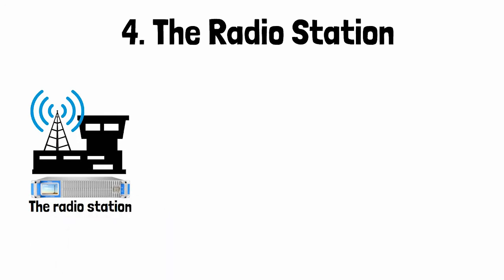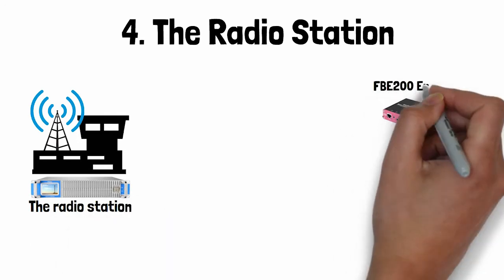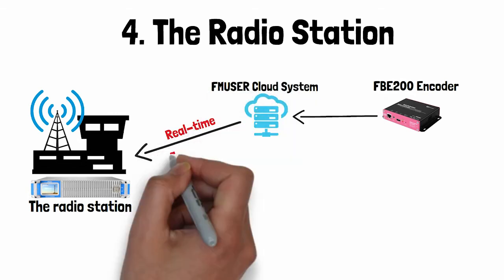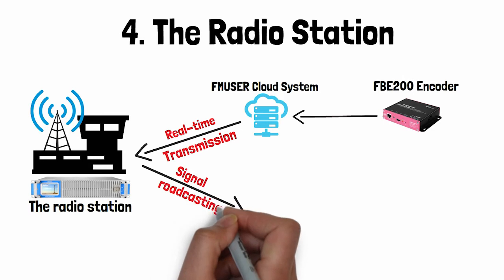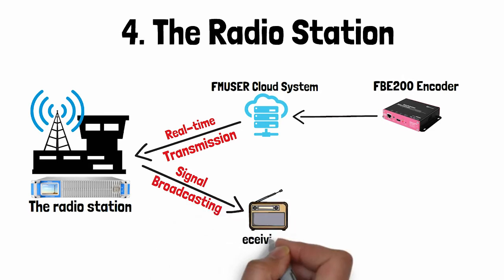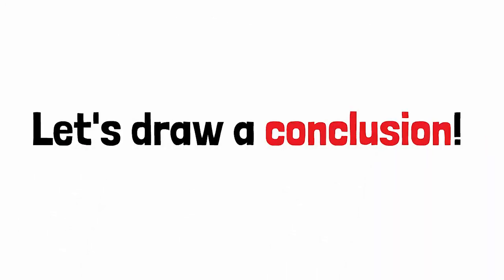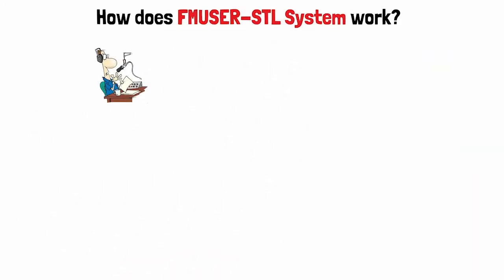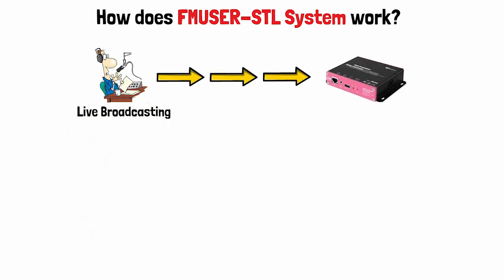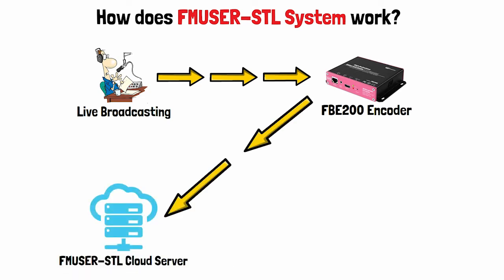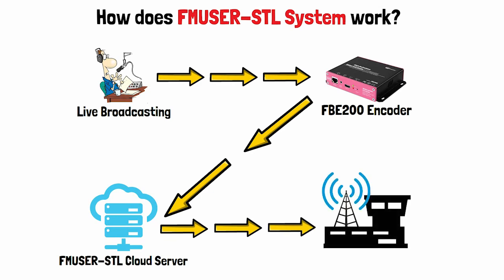Finally, after receiving the IP signals modulated from audio signals by the FB200 encoder, the signals stored by the cloud system will be sent to the radio station via real-time transmission and eventually be demodulated by the radio, so that we can listen to the broadcast. In summary, the radio signals are first delivered by live broadcasting, then transferred into IP signals, uploaded to the cloud server, and finally transmitted.